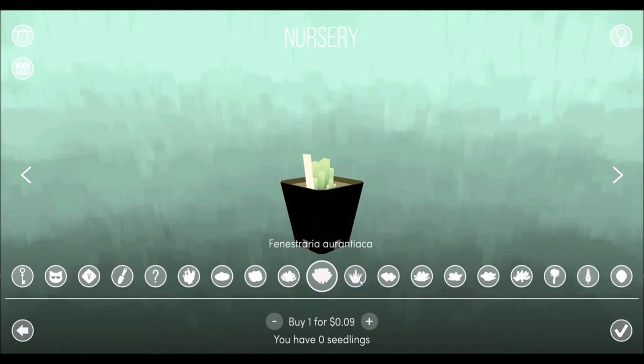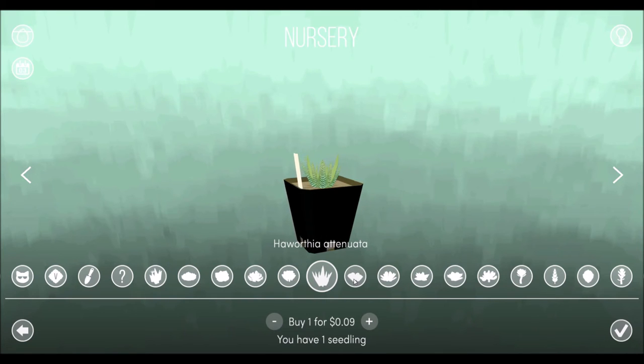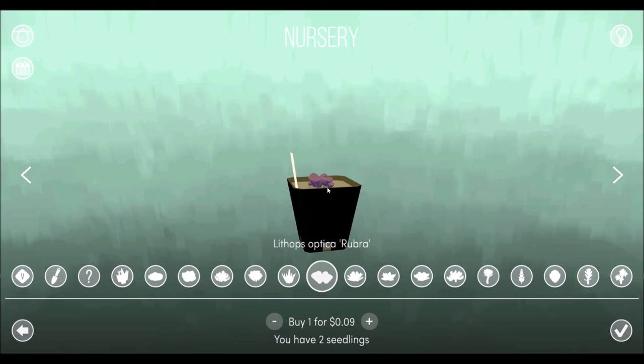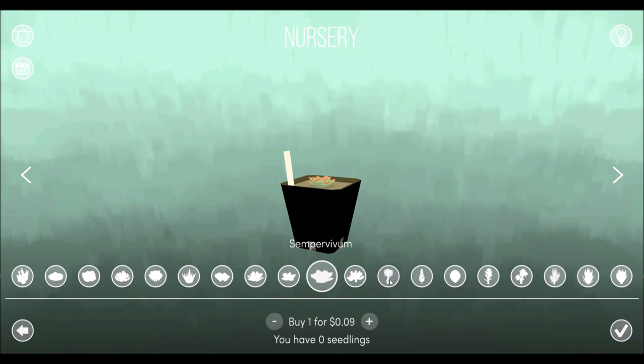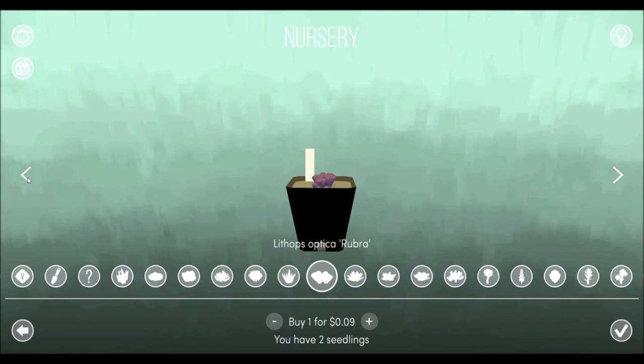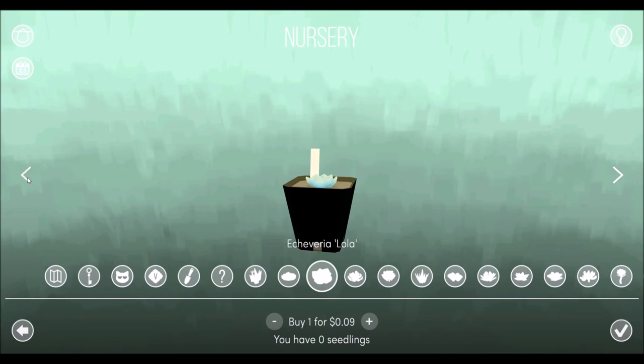But it will show if you have any seedling. So like that one there, I have one, two right there, and some will say zero. So each one of those has a price tag of $0.09 it looks like. So if you have a PayPal account or direct credit card connected into your Steam account, you can buy those.